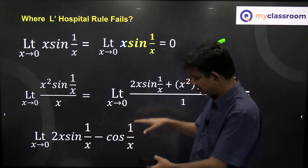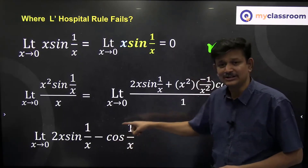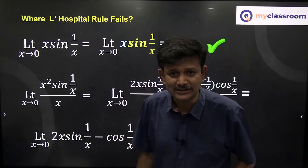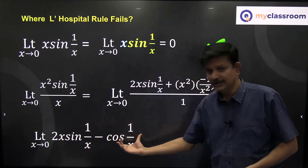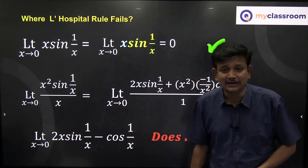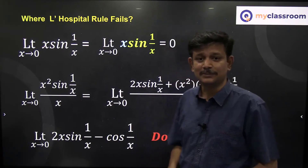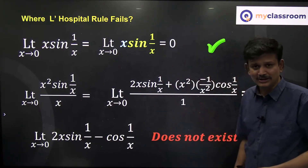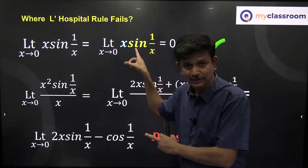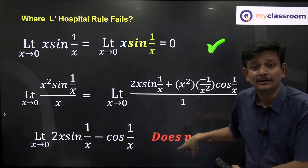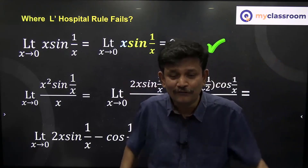However, for the cos(1/x) term: as x→0, 1/x tends to infinity, and cos of any number lies between −1 and 1. We cannot say which specific value it approaches — so the limit does not exist. The L'Hôpital result says the limit does not exist, whereas the true answer is 0. L'Hôpital's rule has failed here.